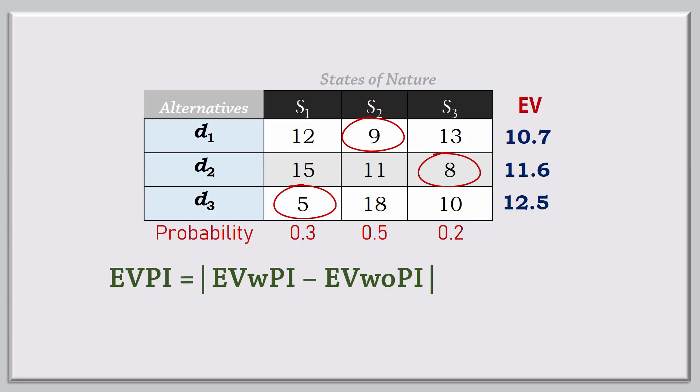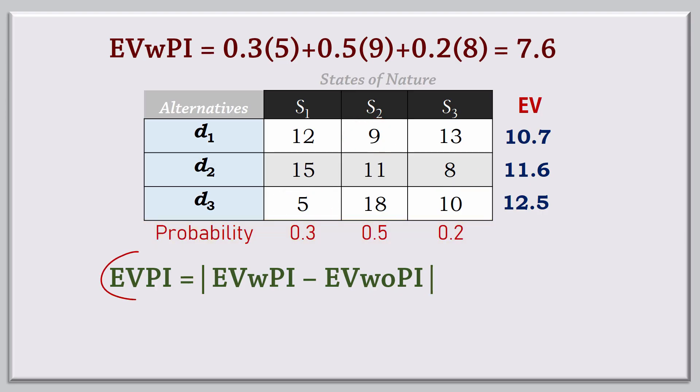The expected value with perfect information is thus calculated as 0.3 times 5 plus 0.5 times 9 plus 0.2 times 8. And that gives 7.6. So EVPI is calculated as the absolute value of 7.6 minus 10.7, which gives the absolute value of negative 3.1. And that gives 3.1.